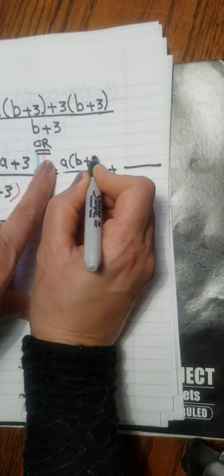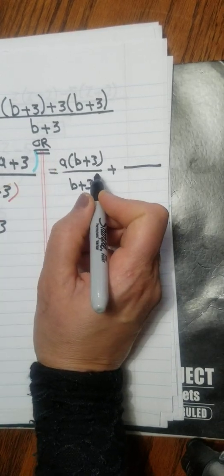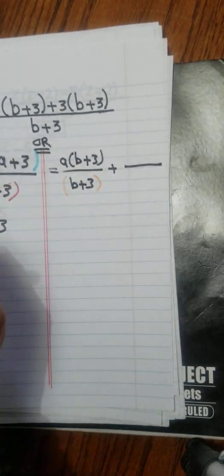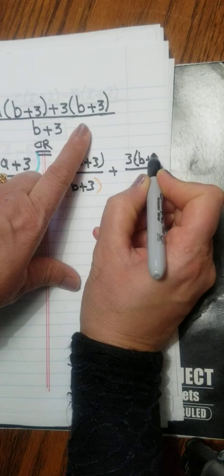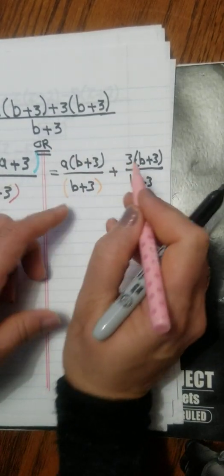A, B plus 3, over B plus 3. And don't forget, guys, parentheses right here. And I have 3, B plus 3, over B plus 3, and parentheses.